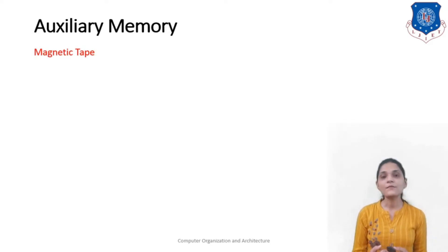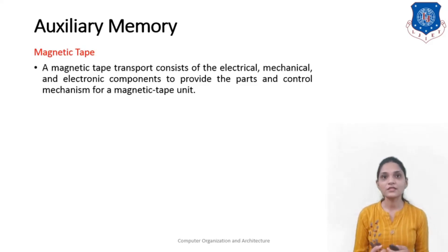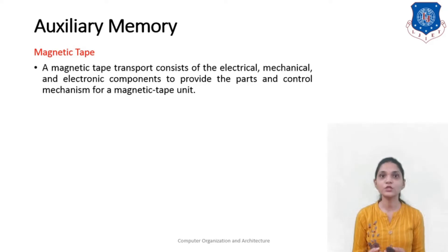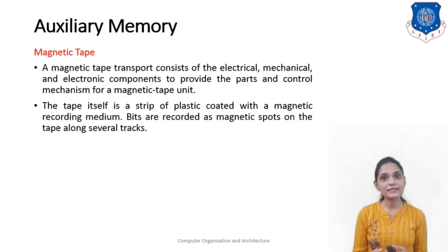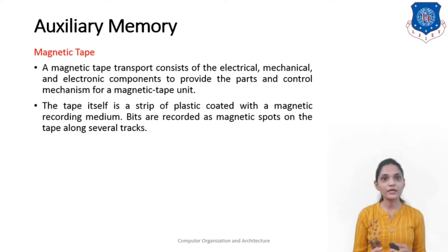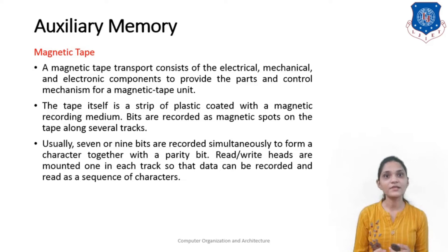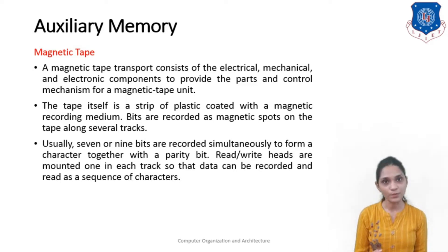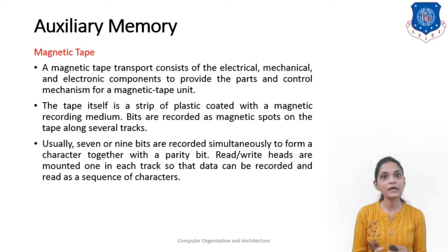A disc drive with a removable disc is known as a floppy disc. A magnetic tape transport consists of electrical, mechanical, and electromagnetic components to provide power and control for the magnetic tape unit. The tape itself is a strip of plastic coated with magnetic recording medium. Bits are recorded as magnetic spots on the tape along several tracks. Usually 7 or 9 bits are recorded simultaneously to form a character, together with a parity bit.